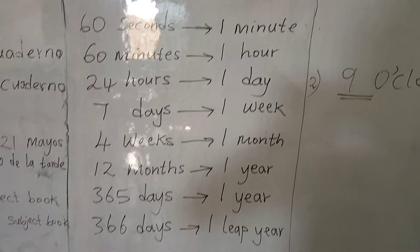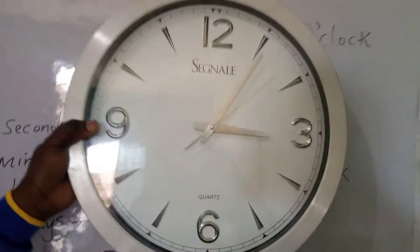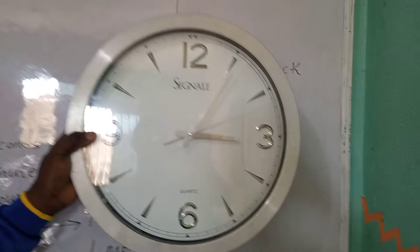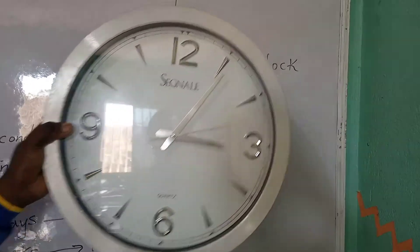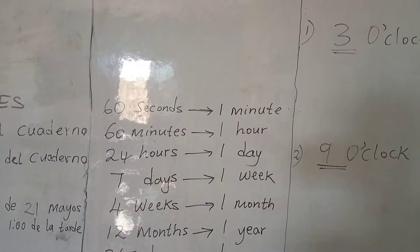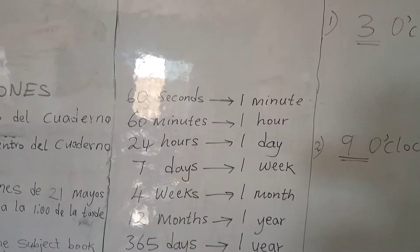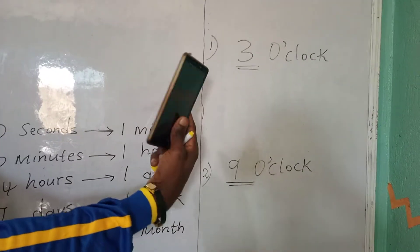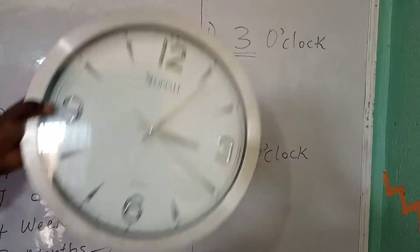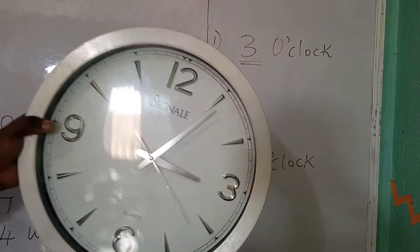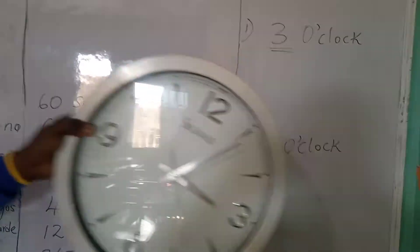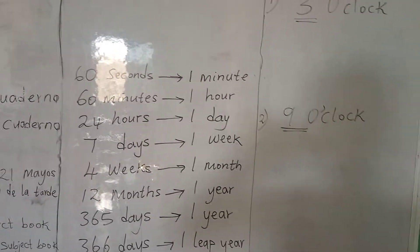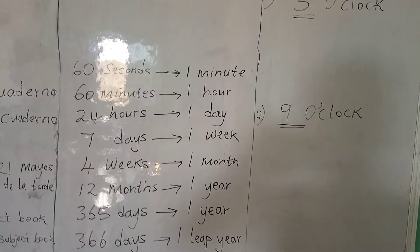For example, this is a clock which tells us the time. Not only the clock — we also have a phone which tells us the time. We also have the watch that we put on our wrist, which also tells us the time.